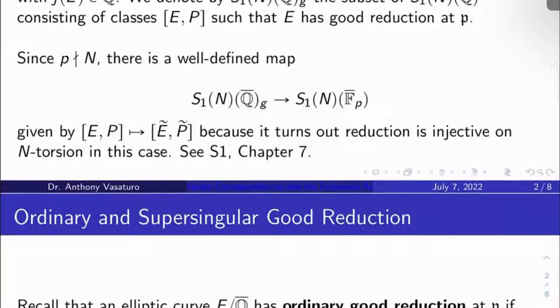Since p doesn't divide N, you can check, this is done in Silverman 1 chapter 7, there's a well-defined map from S₁(N)(Q̄)_G to S₁(N)(F_℘). And what do you do? You just send a class of enhanced elliptic curve [E, P] to the class of the enhanced elliptic curve given by the reduction of E and the reduction of P, Ẽ and P̃.